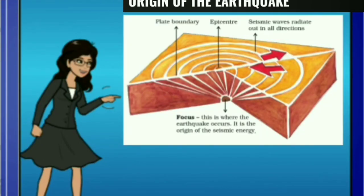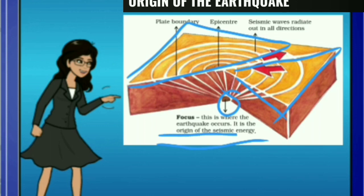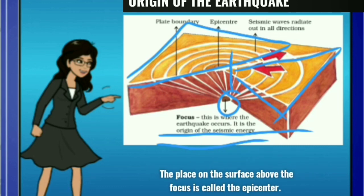Here in this diagram you can see two lithospheric plates and their boundaries. They are moving in different directions as shown. Suppose at a particular point the rock breaks — vibrations will take place. This point is known as the focus. The point where the earthquake starts is known as the focus. Coming vertically above the focus, this point is known as the epicenter.